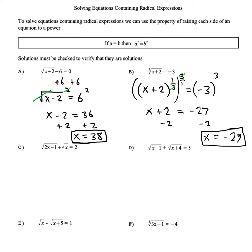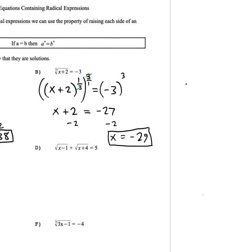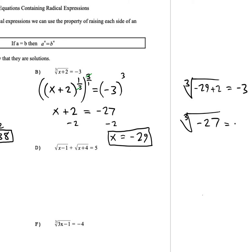Let's check: the cube root of (negative 29 + 2) should equal negative 3. That's the cube root of negative 27, which does equal negative 3, since negative 3 times itself times itself makes negative 27. It checks.